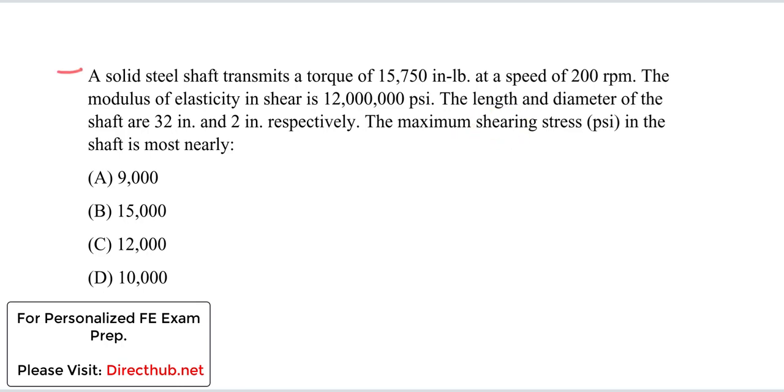For this example, we have a steel shaft that transmits a torque of 15,750 inch-pounds at a speed of 200 revolutions per minute. The modulus of elasticity in shear is 12 million psi, so 12 times 10 to the sixth. The length and diameter of the shaft are 32 inches and 2 inches respectively. We want to find the maximum shearing stress in the shaft.